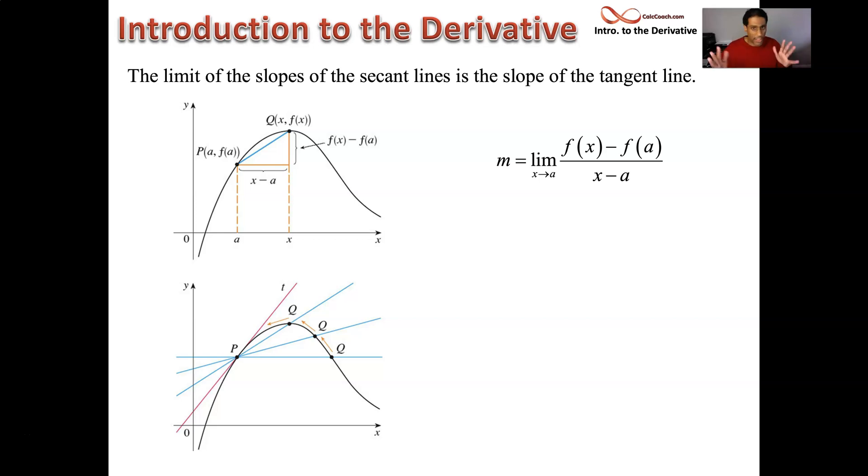And we spent time talking about limits. We went all the way through, talked about limits at infinity. Now we're going to use this limit to calculate the slope of the tangent line. So we have f(x) minus f(a), the difference in the y's, divided by x minus a, the difference in the x's. That'll be the slope of the blue line. And we are taking the limit as x goes to a.